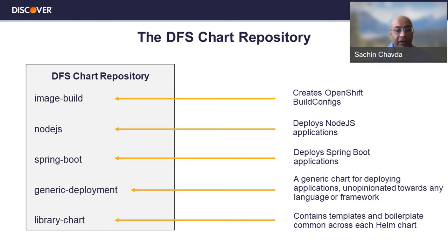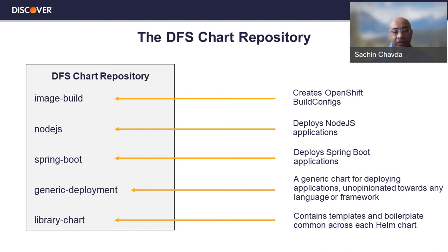The Helm charts provide a common set of components for all application teams and represent an opinionated solution curated by the enterprise platform team. We started by building the image build chart for building application images, which translates into the OpenShift BuildConfig. Then we have specific deployment charts for each technology: a Node.js chart for Node.js applications, a Spring Boot chart for Spring Boot applications, and a generic deployment chart that is unopinionated toward any language or framework. There is also a set of common templates and boilerplate code that we abstract into a library chart.